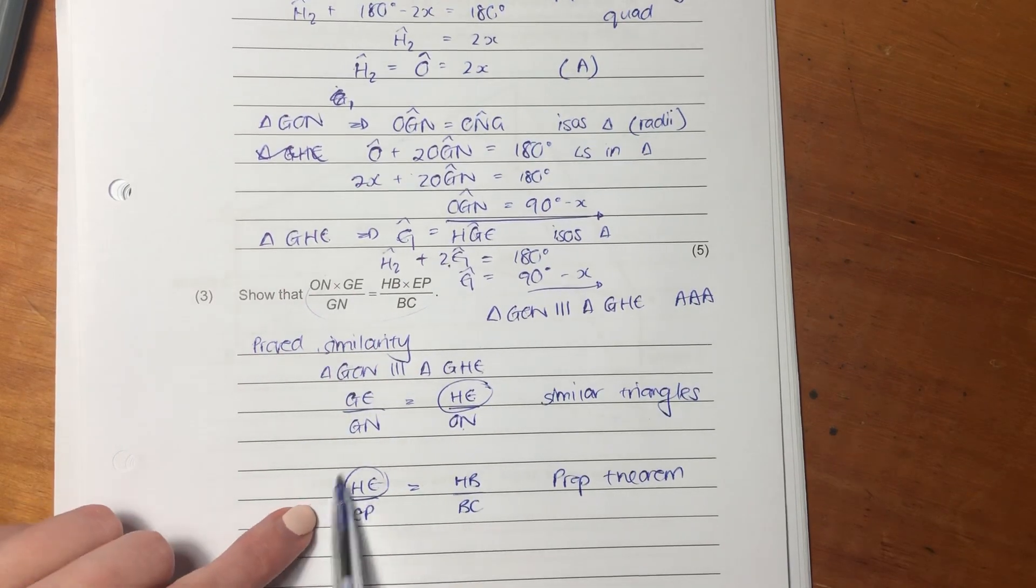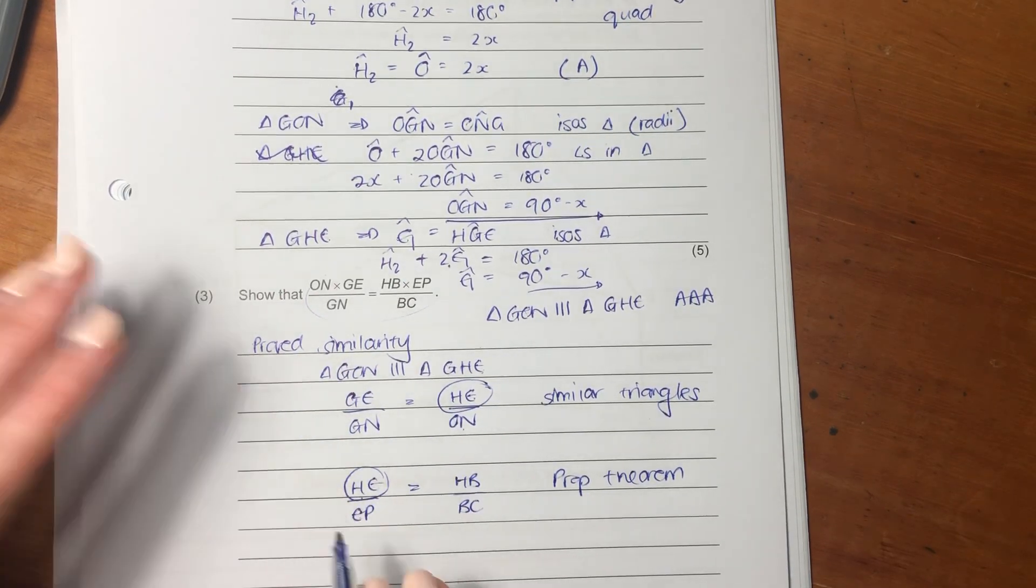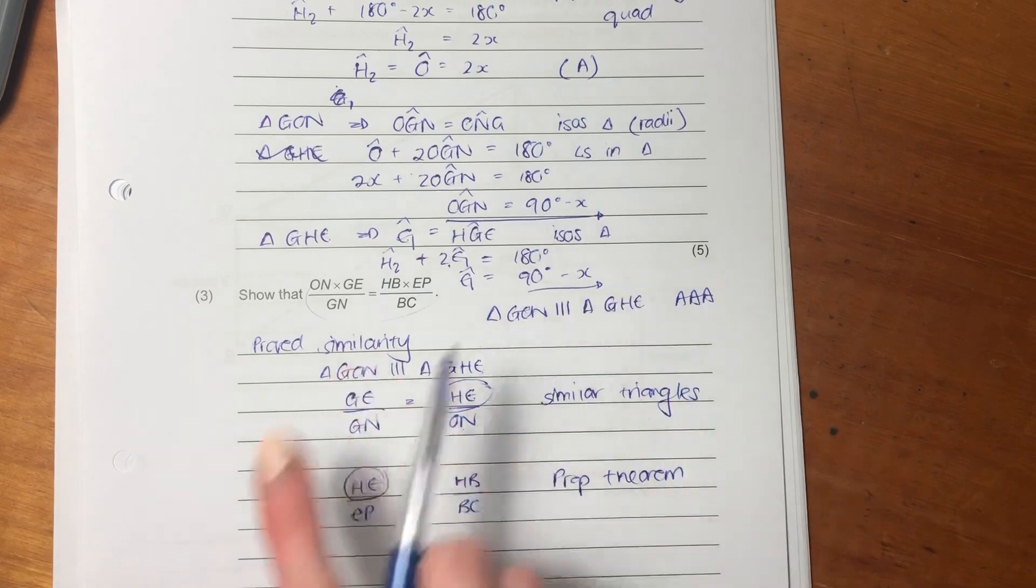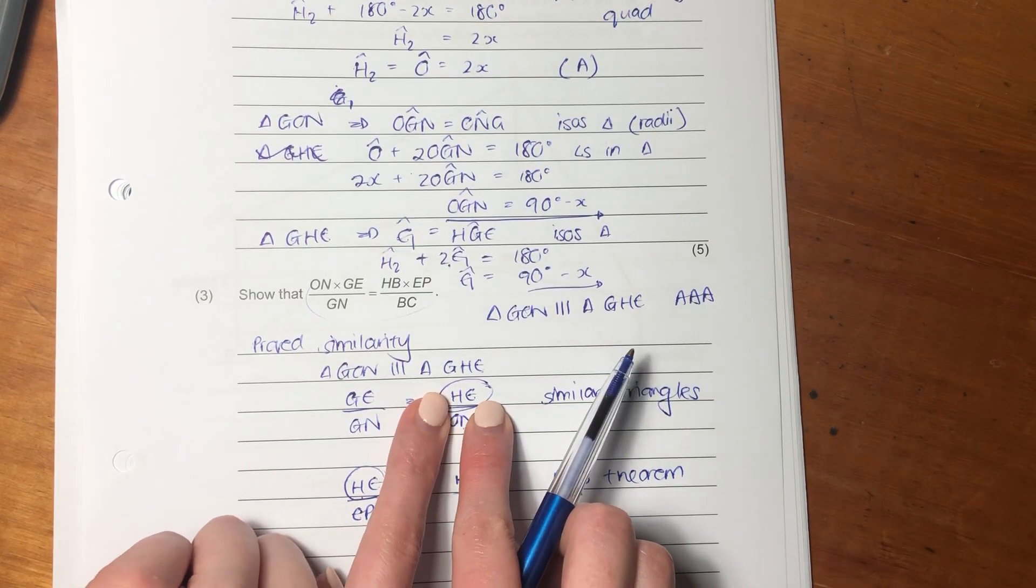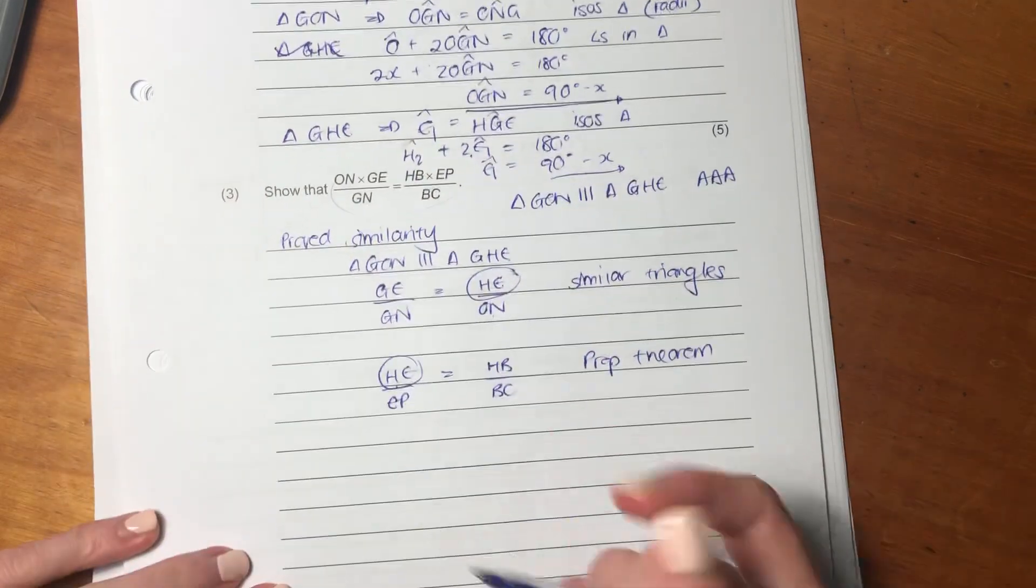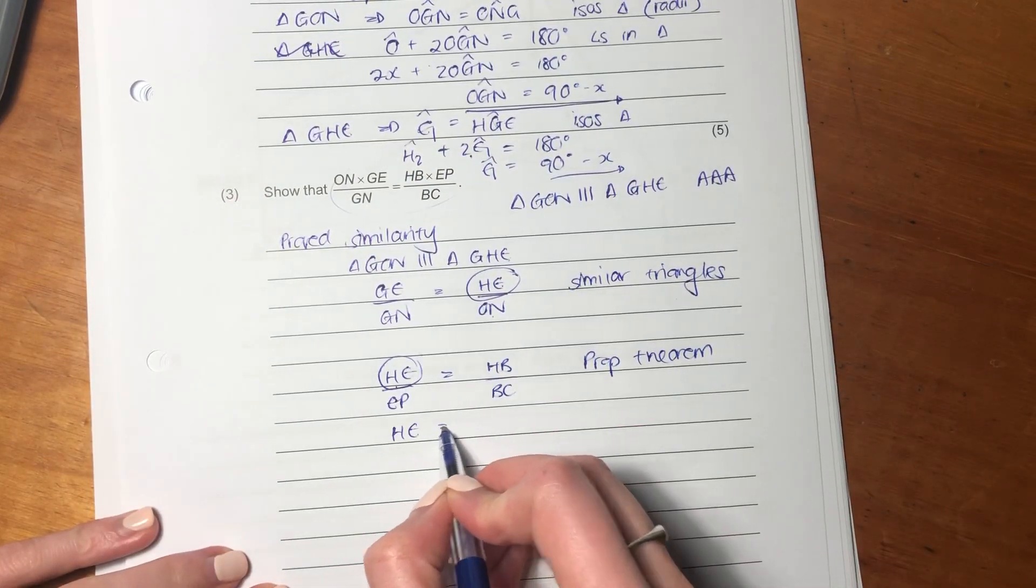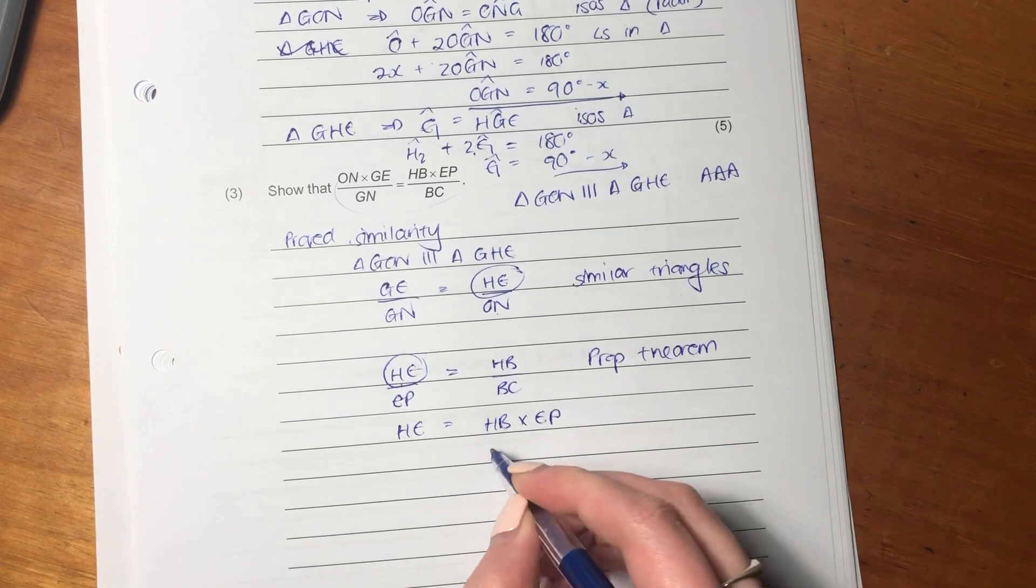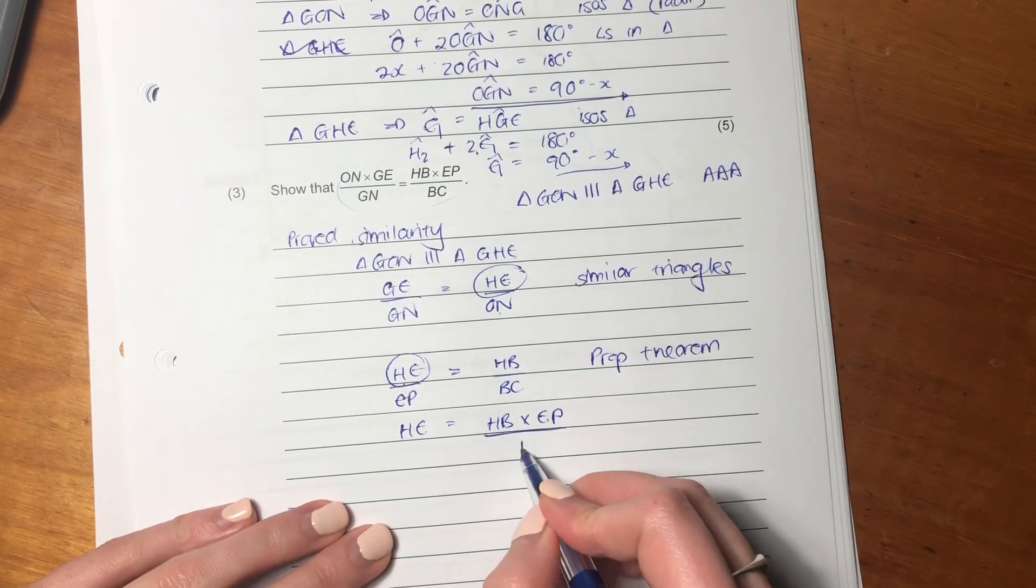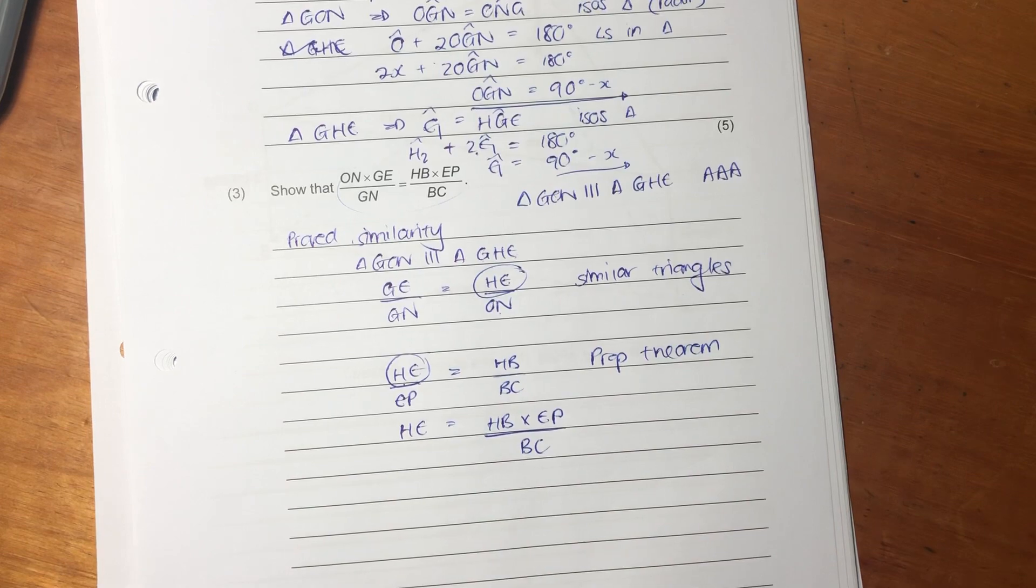So here, let's put this in the form that H-E equals something, sub it back into there, and then we can actually get what we want. So I'm going to say H-E equals H-B times E-P over B-C. That's very handy.